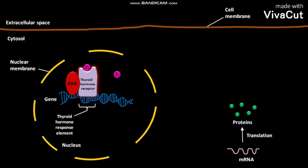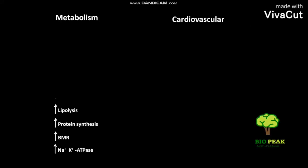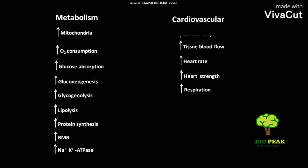These proteins have effects on metabolism, cardiovascular, CNS development, growth, and many other systems. These are the enzymes, processes, and organelles related to metabolism upon which thyroxine exerts an increasing effect. These are the processes and quantitative data related to cardiovascular upon which thyroxine exerts an increasing effect.